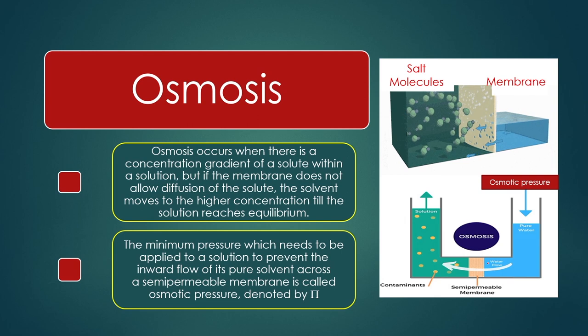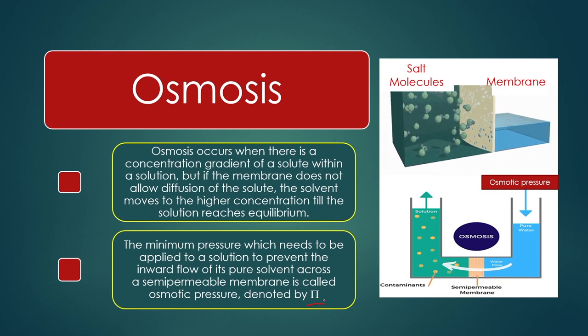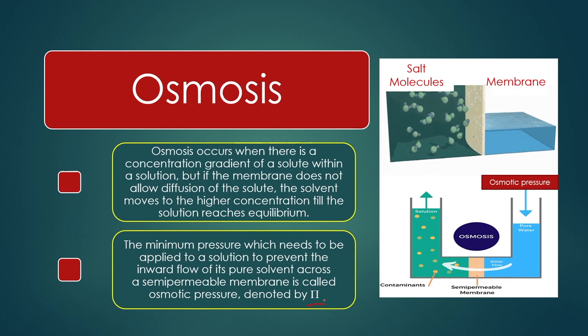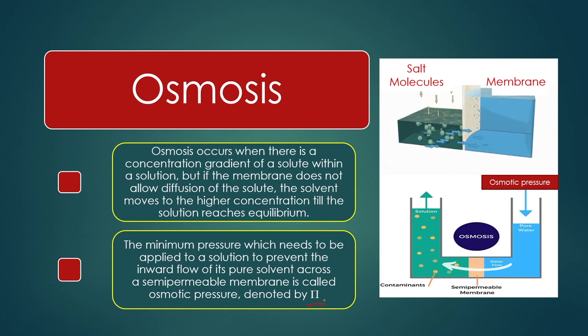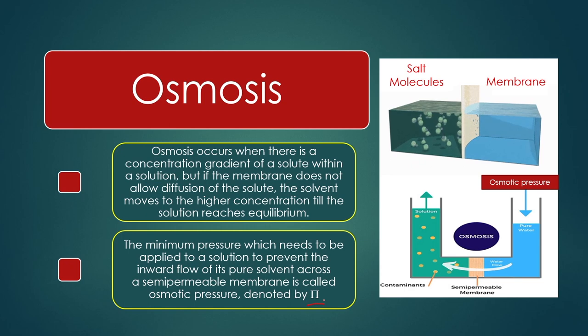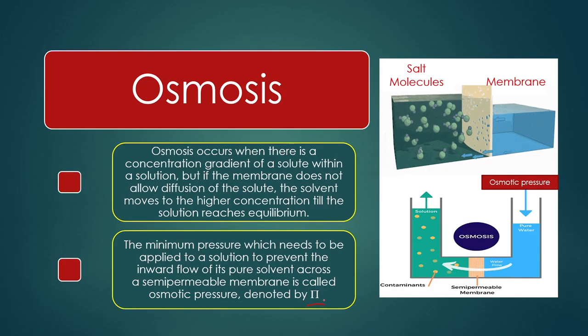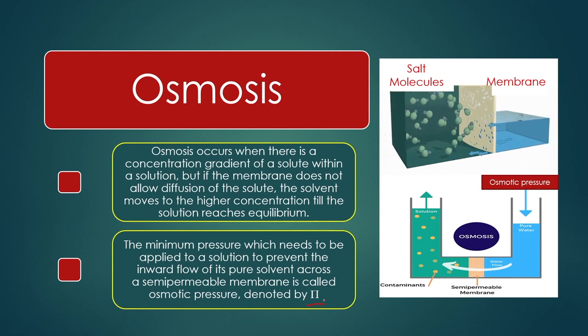The osmotic pressure, denoted by phi (φ), drives the pure solvent toward the higher concentration. In earlier lectures we showed that the net pressure governing filtration is the total pressure minus the osmotic pressure. When operating with pure solvent, osmotic pressure is negligible compared to total pressure and is therefore ignored. In osmosis, the solvent passes from lower to higher concentration driven by this osmotic pressure.